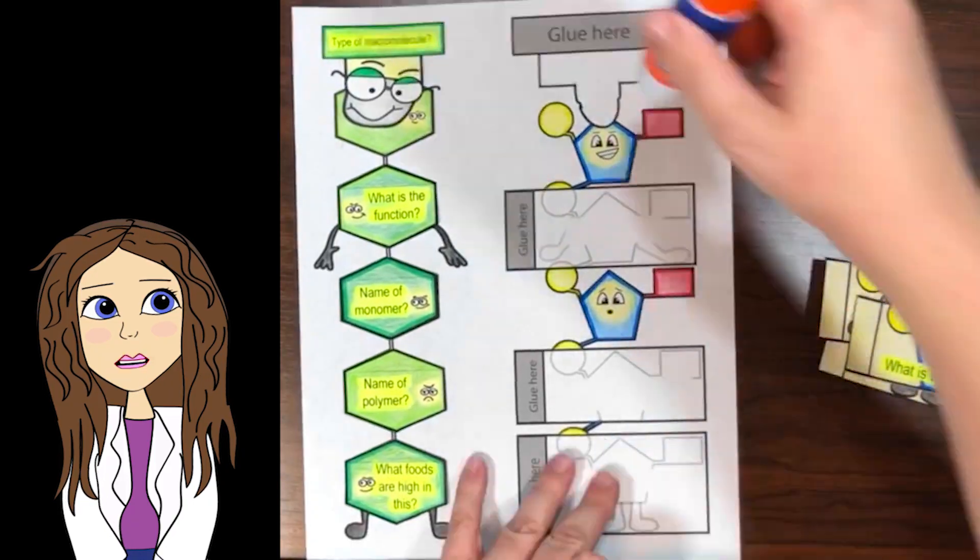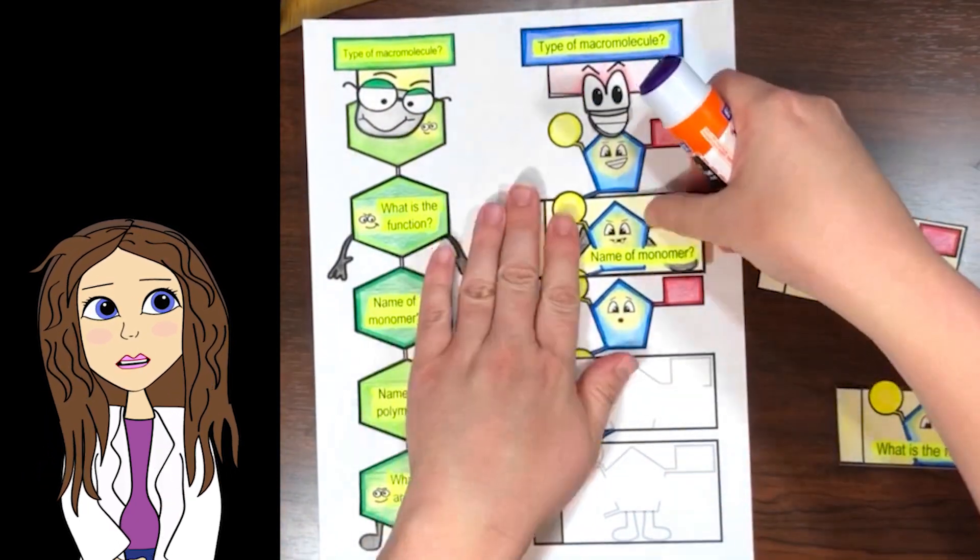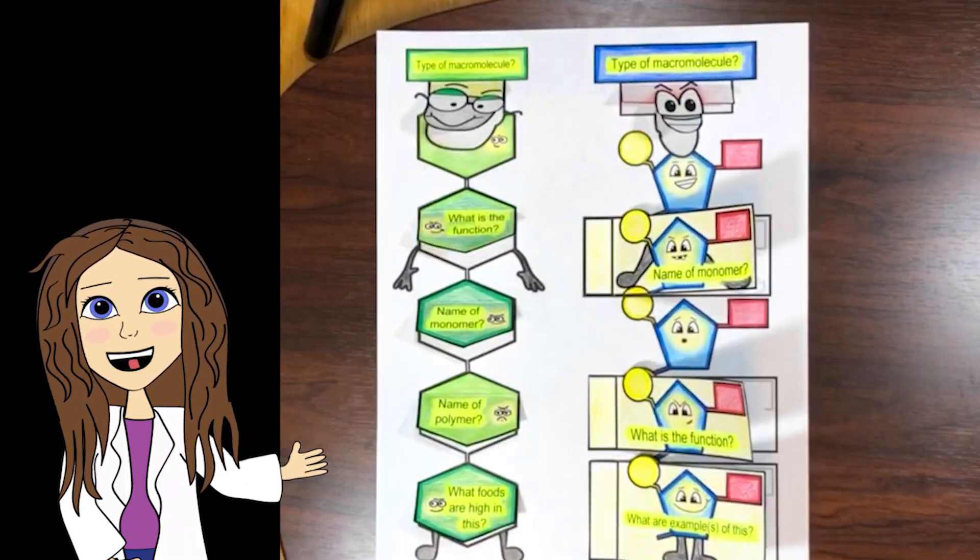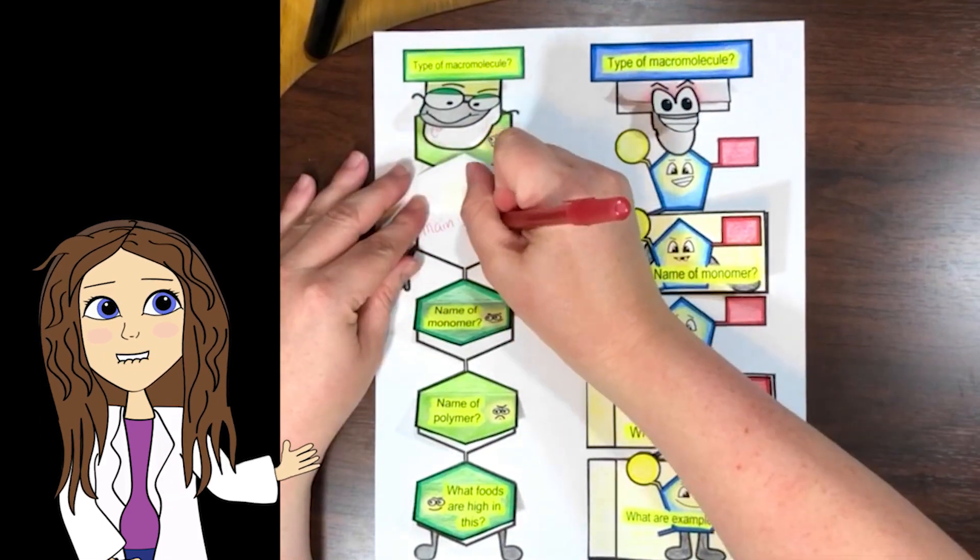You will start by cutting out all of the flap pieces and then gluing them to their correct location on the macromolecules. After you have glued down the pieces, then you will lift the flaps and write information about that type of macromolecule.